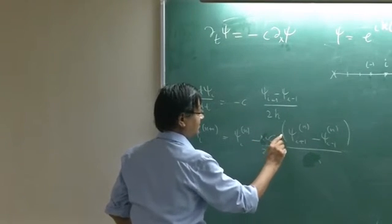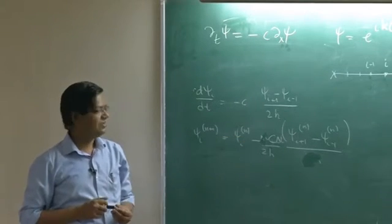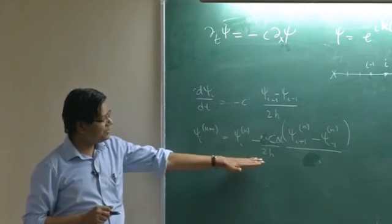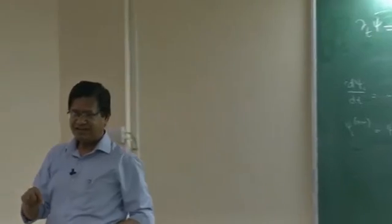Delta t has to be there. Now, given psi n I can go to psi n plus 1 for every i. That means, I've got the values at next time step. Then next time step, next time step. I can go from t equal to 0 to t final.